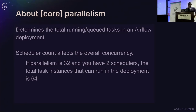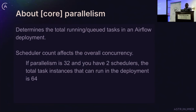The scheduler count also affects total parallelism. If parallelism is set to 32 and you have two schedulers, then the total task instances that can run in that system is 64 — that includes both running and queued tasks.